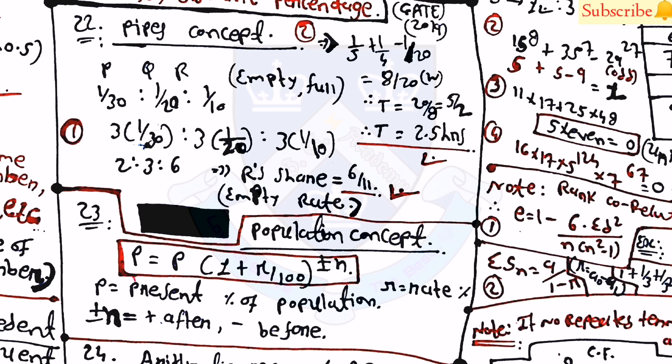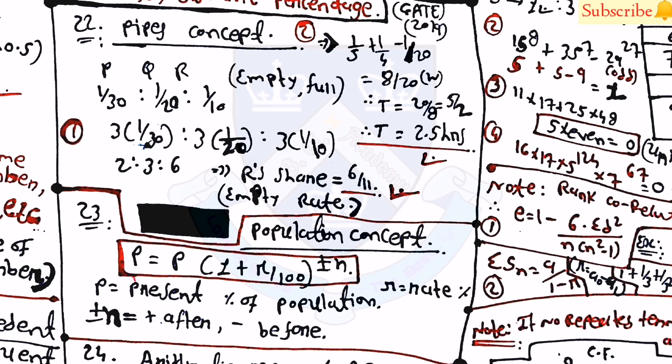Topic 22 covers the pipe concept for finding time taken to fill or empty a tank. Topic 23 is the population concept, where P = P₀ × (1 ± r/100)^(±n), used for finding the present population, where r = rate percentage, +n = years after, and −n = years before.